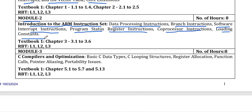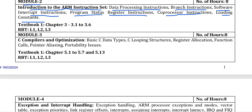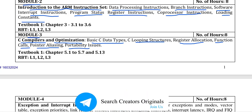Module 2 also covers loading constraints. In module 3, it has C compilers and optimization, which includes basic C data types, C looping structures, register allocation, function calls, pointer aliasing, and portability issues.